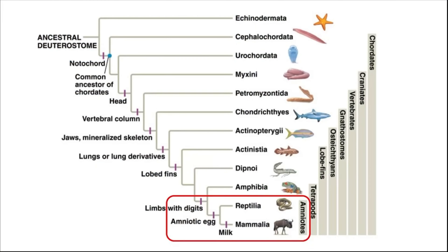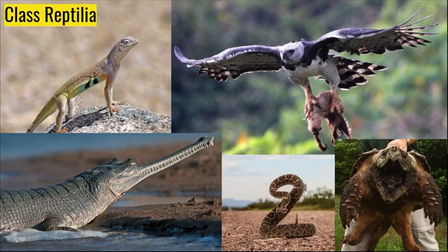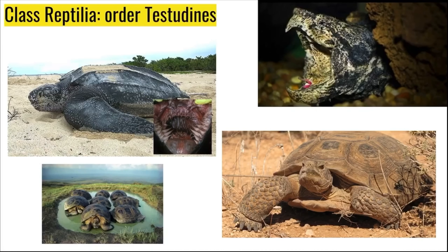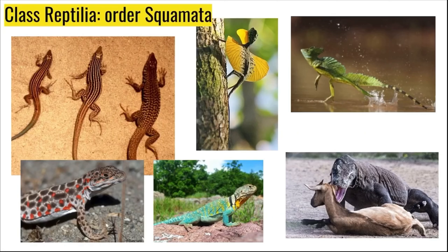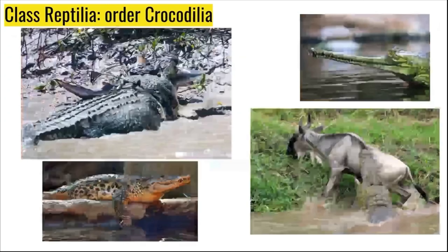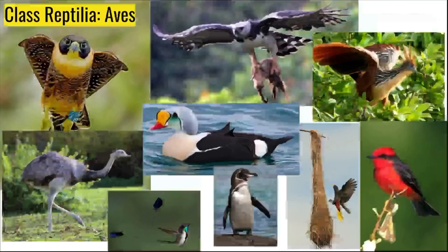The last group of chordates we'll talk about are the amniotes. The first group of amniotes we'll talk about are the reptiles. Testudines includes turtles and tortoises. Squamata includes lizards; the largest squamate is the Komodo dragon. On the top right is a basilisk, an example we looked at before to describe surface tension. Crocodilia is an order within Reptilia that includes crocodiles, alligators, and gharials. Aves is a class within Reptilia — this includes the birds. Birds are firmly rooted within the sauropod dinosaurs, which are another group of reptiles.